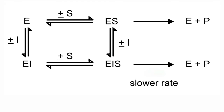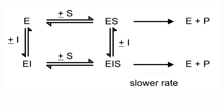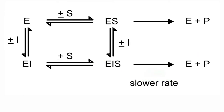The enzyme-substrate complex can give rise to product, whereas the enzyme-inhibitor-substrate complex forms products at a very slow rate. When this non-competitive inhibitor binds with the enzyme, it probably brings changes in the three-dimensional structure of the enzyme, which affects the catalytic efficiency of the enzyme.